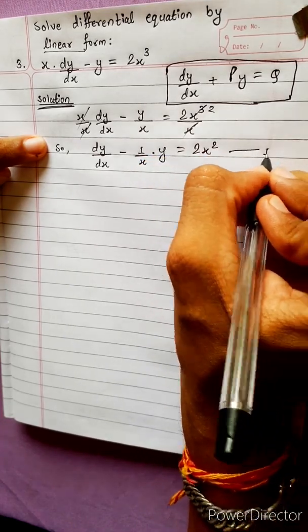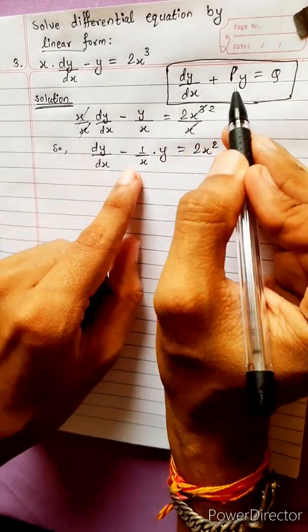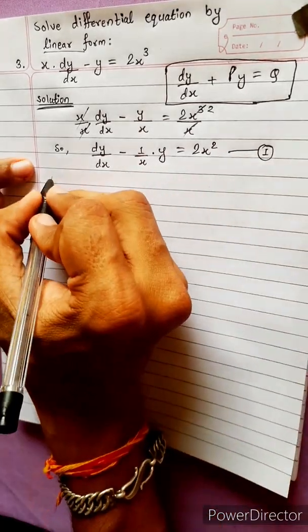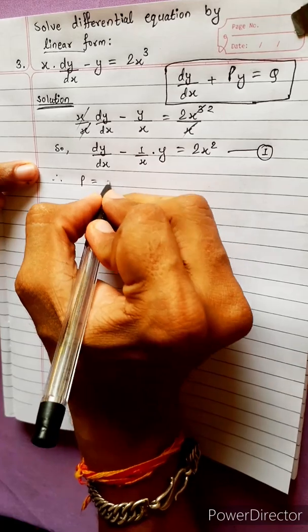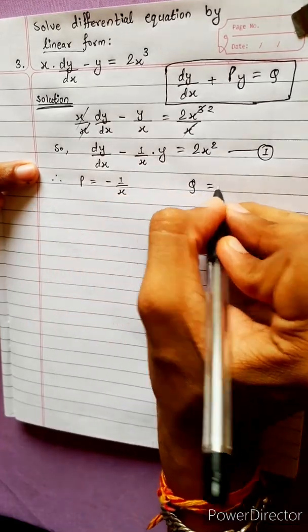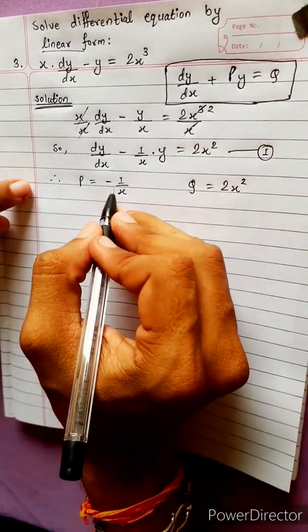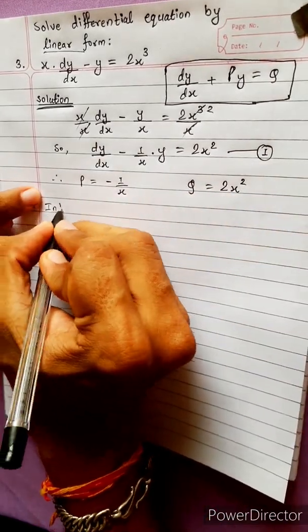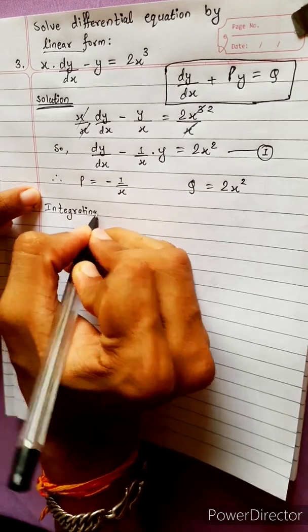Now let's compare with the standard equation dy/dx plus p·y equals q. Comparing, p equals minus 1 by x, and q equals 2x squared. Now we find the integrating factor.